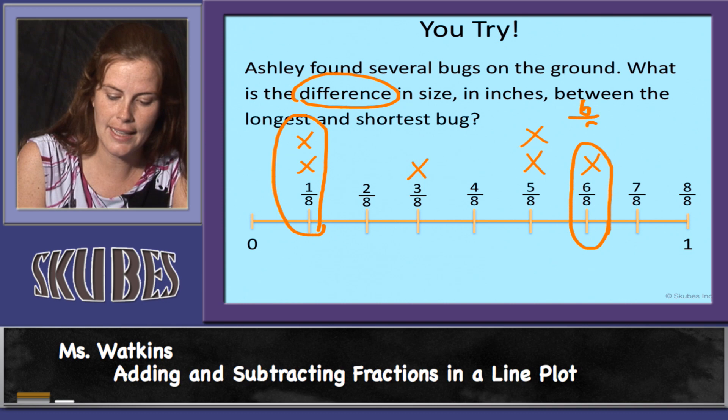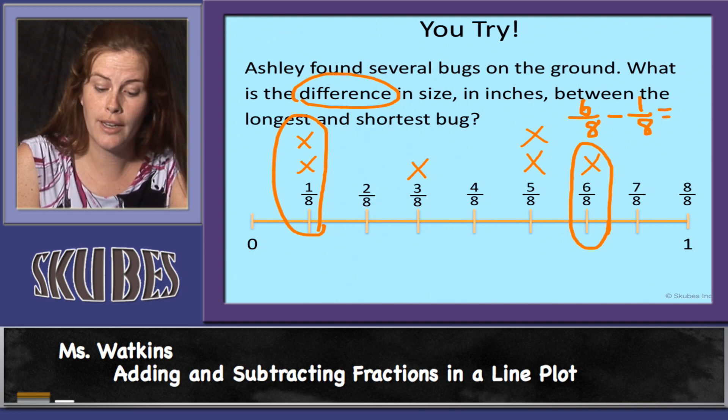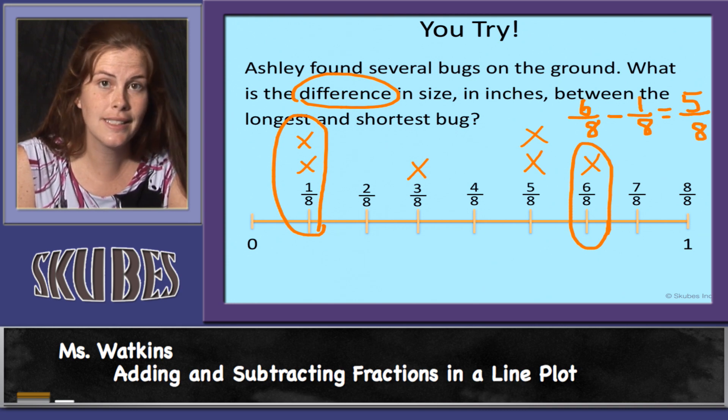So we'll do six-eighths minus one-eighth. Subtract our numerator: six minus one equals five. And our denominators stay the same. So the difference in size in inches is five-eighths inches.